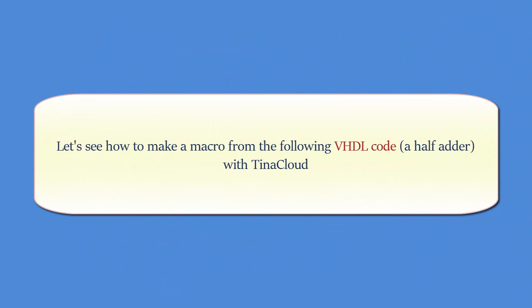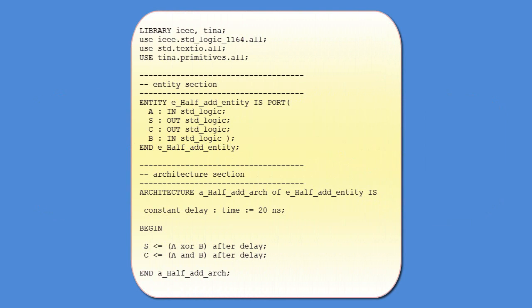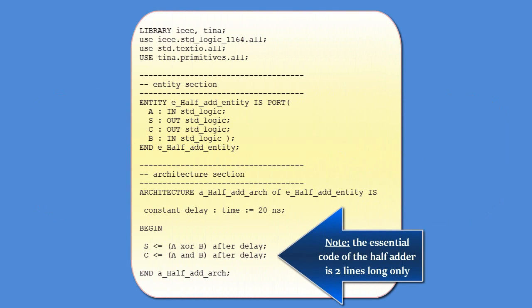Let's see how to make a macro from the following VHDL code, a half adder, with Tina Cloud. Note, the essential code of the half adder is two lines long only.